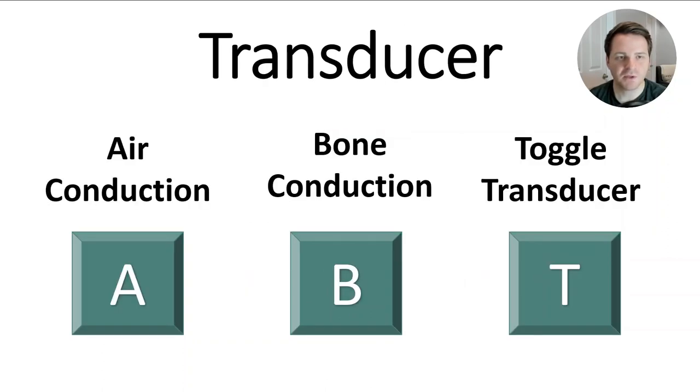The transducer can also be changed using hotkeys. You can use A for air conduction and B for bone conduction, or you can click T to toggle between transducers.